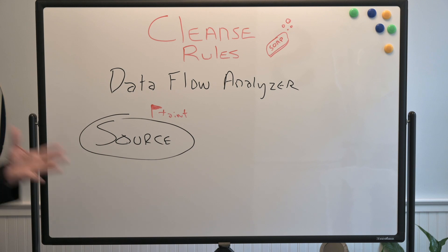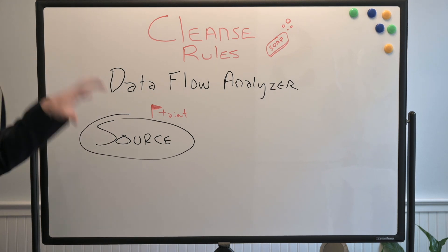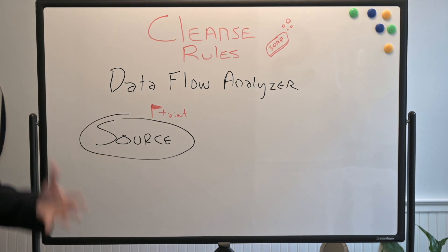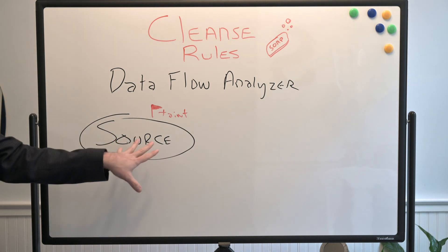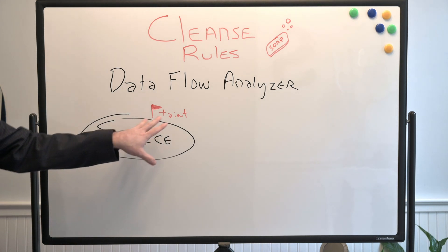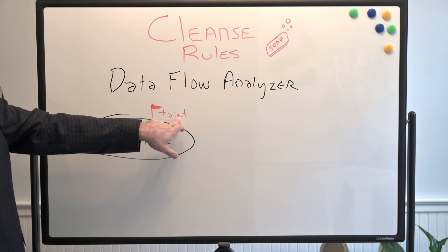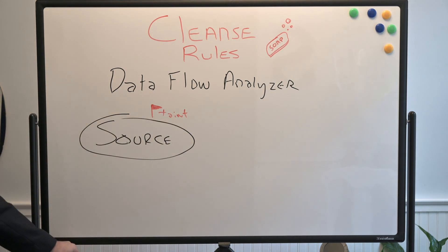Now what the data flow analyzer can't do is it can't make a subjective call on whether this data is actually tainted. It can't determine if a piece of data is actually safe or if it came from a trusted source. All it can tell is that it came from outside the application. So anytime a data source is coming from outside the application, this taint flag is going to be raised.